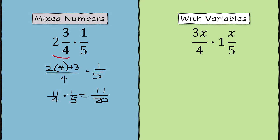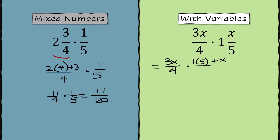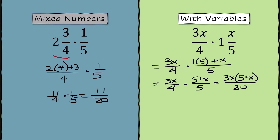When you add variables, this suddenly feels more complicated, but it's the exact same procedure. The 3x over 4 is fine as a fraction already, but 1 with x over 5 is a mixed number. So 1 times 5 plus x will be the numerator over the denominator 5. Remember, we're multiplying — we don't need a common denominator here. So now we have 3x over 4 times the quantity 5 plus x over 5. When multiplying the numerators, use the distributive property: 3x times the quantity 5 plus x, all over 4 times 5, which is 20. Multiplying 3x through gives 15x plus 3x squared over 20.